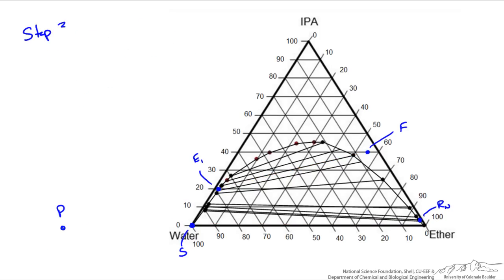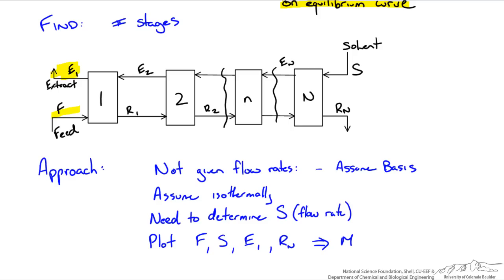The last step, step three, is to use our tie lines and equilibrium lines to determine the amount of stages that we need. We have our operating point, and we know that each line that goes through this point includes the passing streams. The difference between streams is P. That also means that E2 and R1 fall on a line with P, and En and Rn-1 would fall on a line with P.